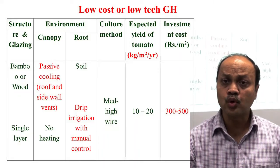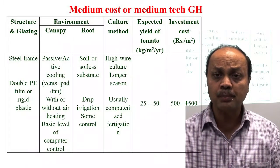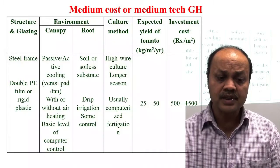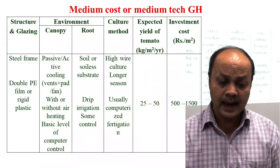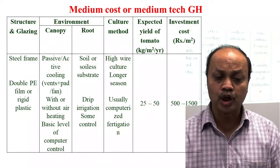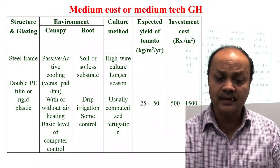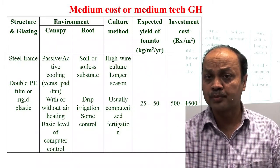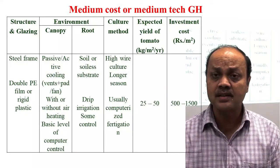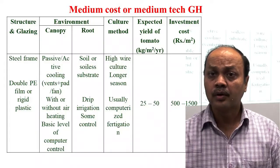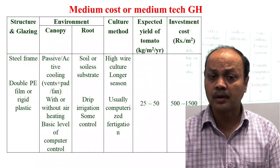In the medium-cost greenhouse, steel frames are used for the structure, along with plastic film cladding. Both passive and active cooling systems can be used, and drip irrigation has some level of control. Apart from soil, artificial growing media or substrate can also be used. Because environment control is better, the yield for tomato is 250 to 500 tonnes per hectare.